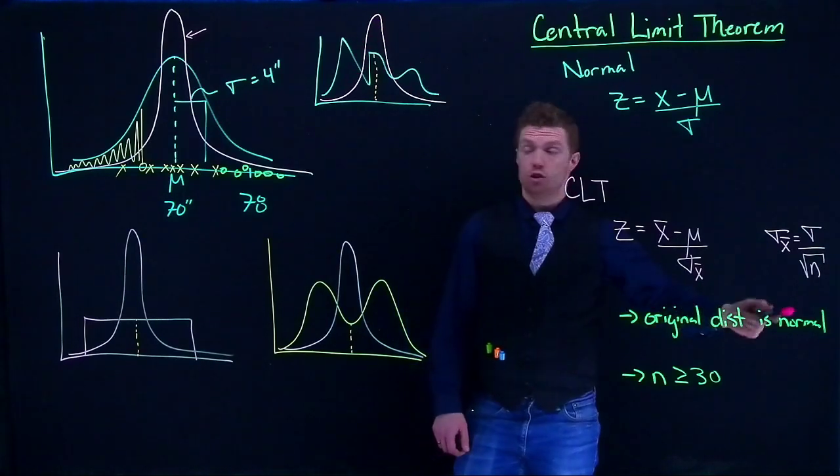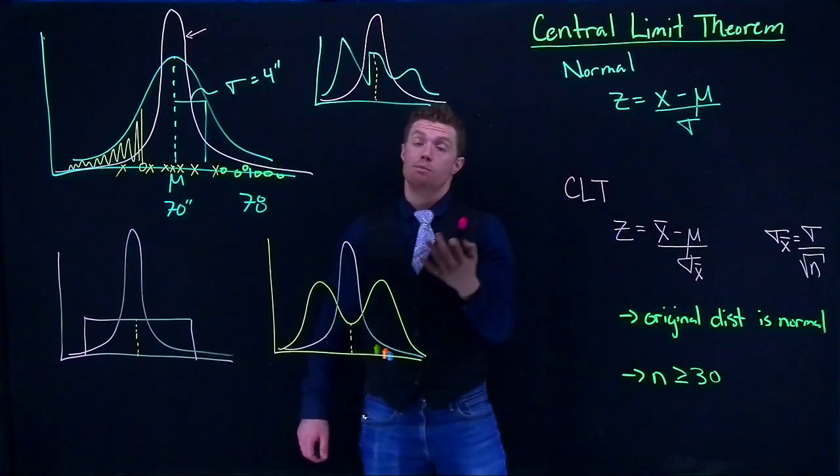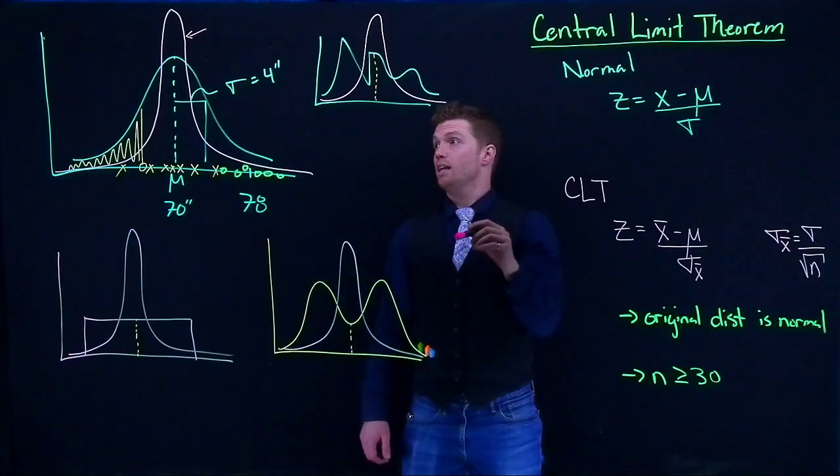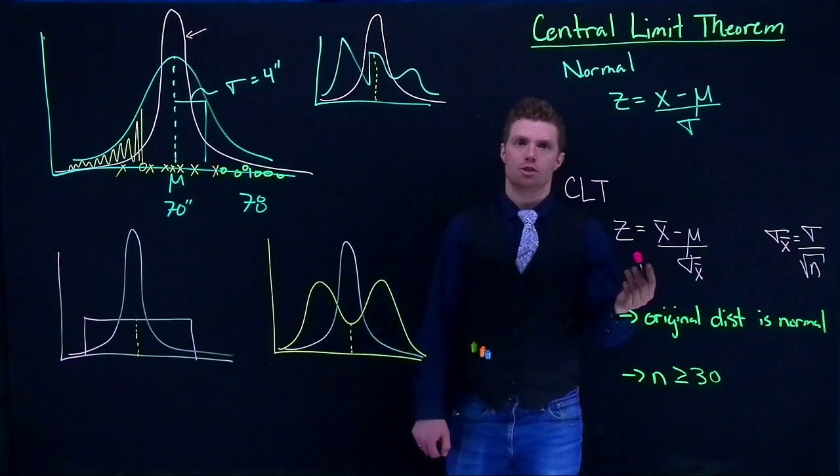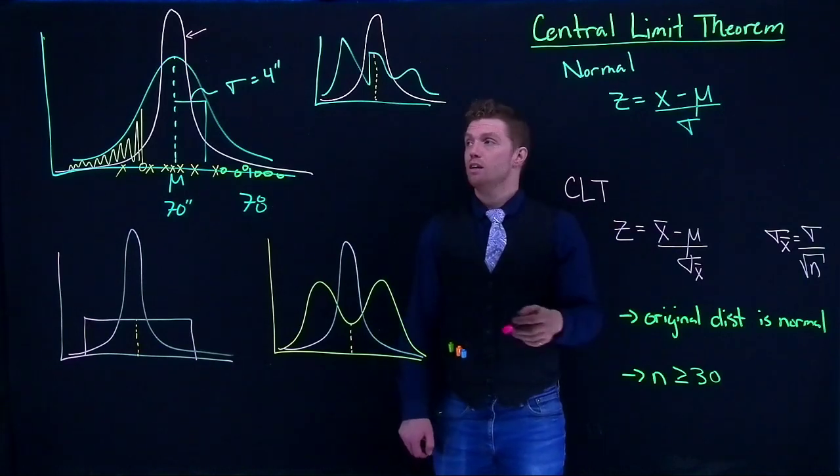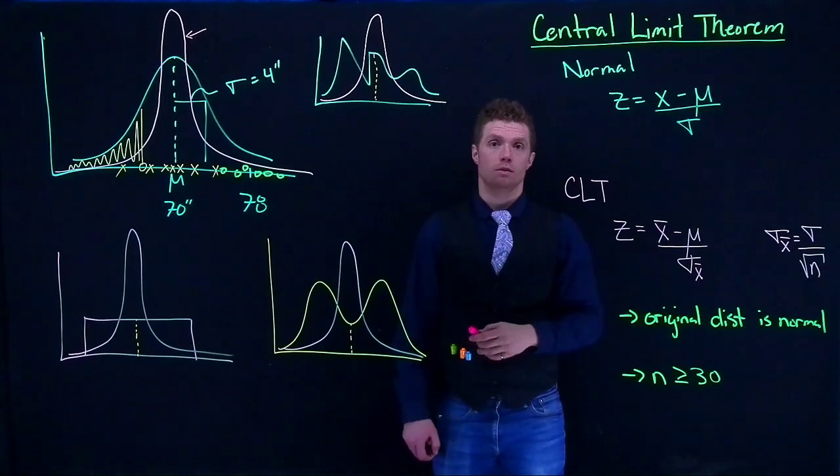But if our original distribution is actually normal, we don't have a minimum sample size. We know that if the original distribution is normal, then the sampling distribution, regardless of the size, is going to be approximately normal as well.